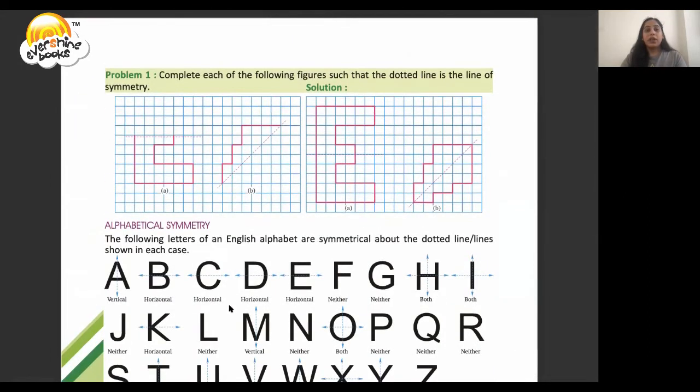So here we have a couple of shapes. We have to complete each of the following figures so that the dotted line is the line of symmetry.